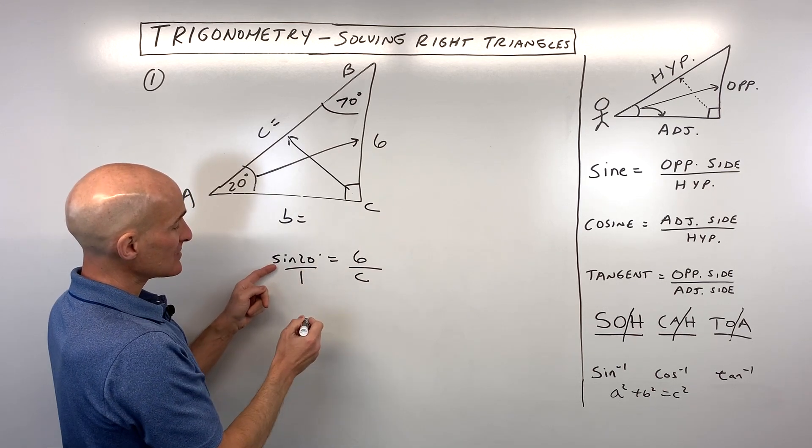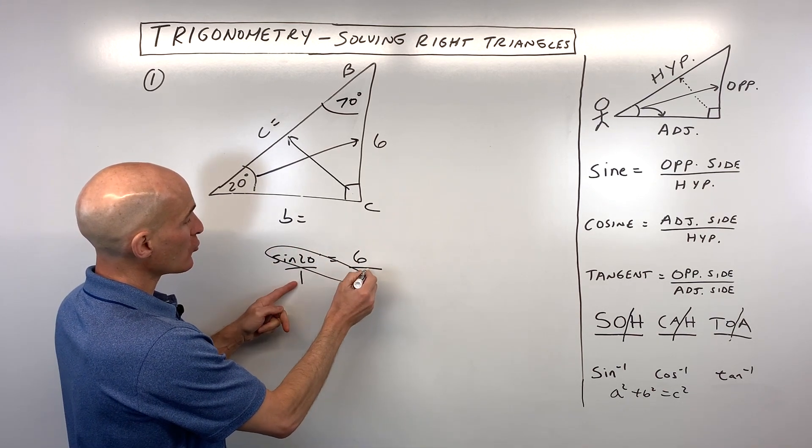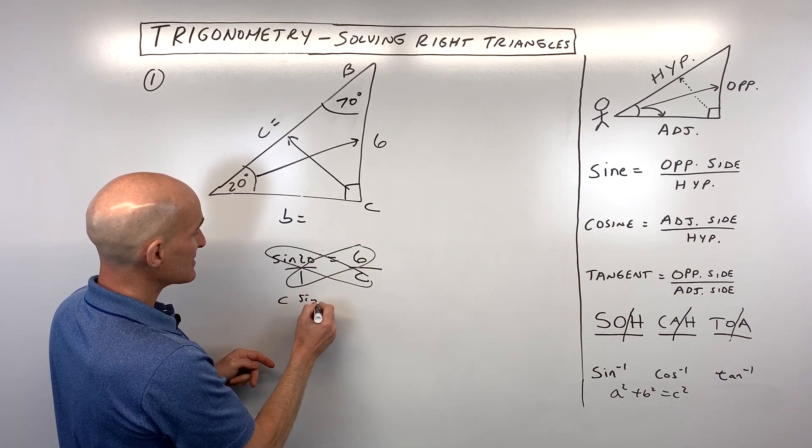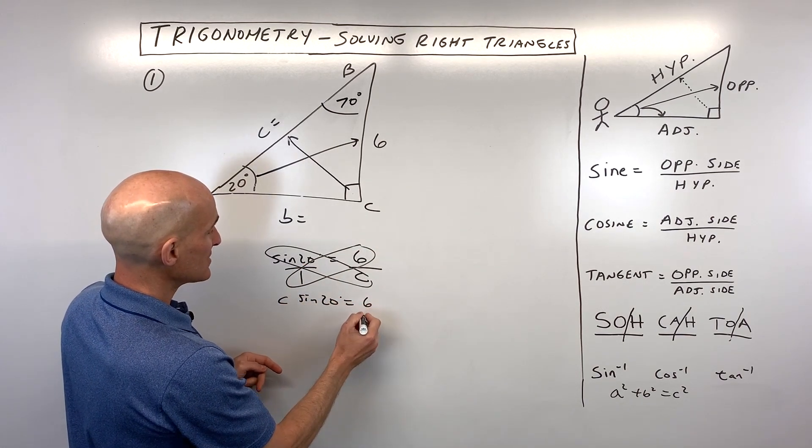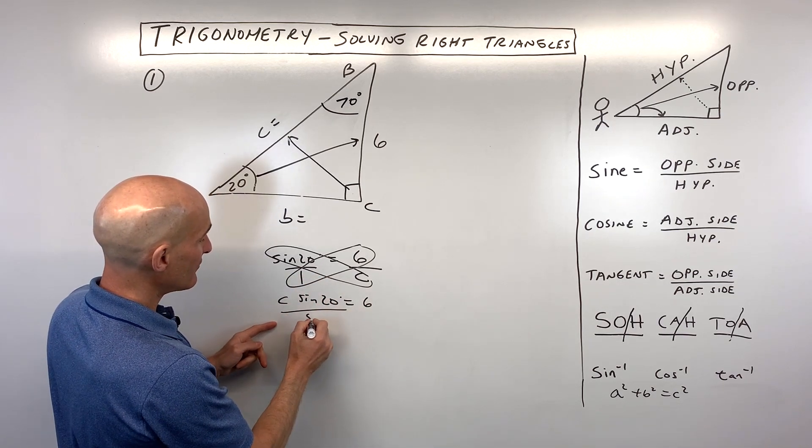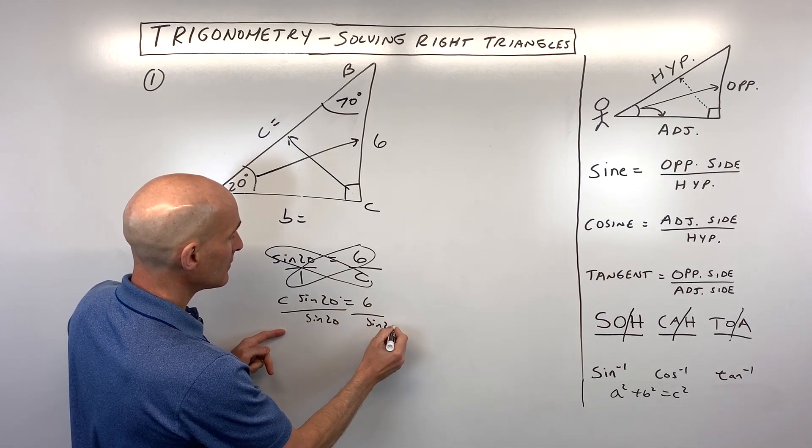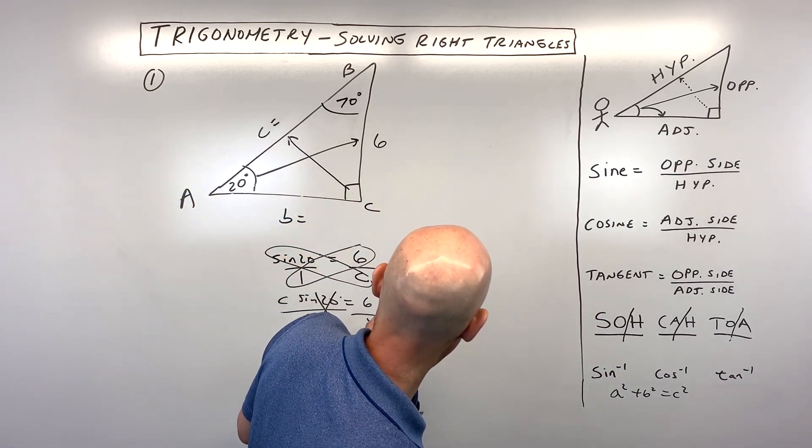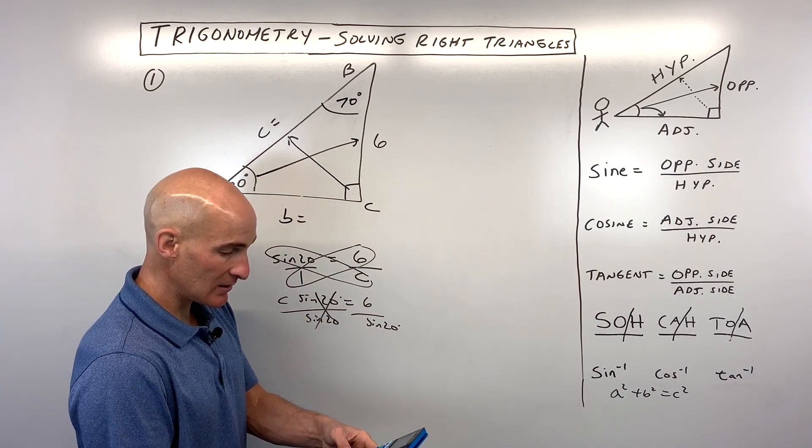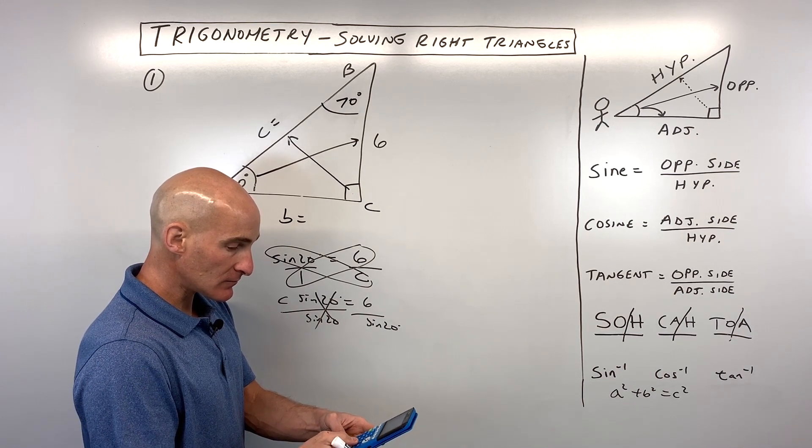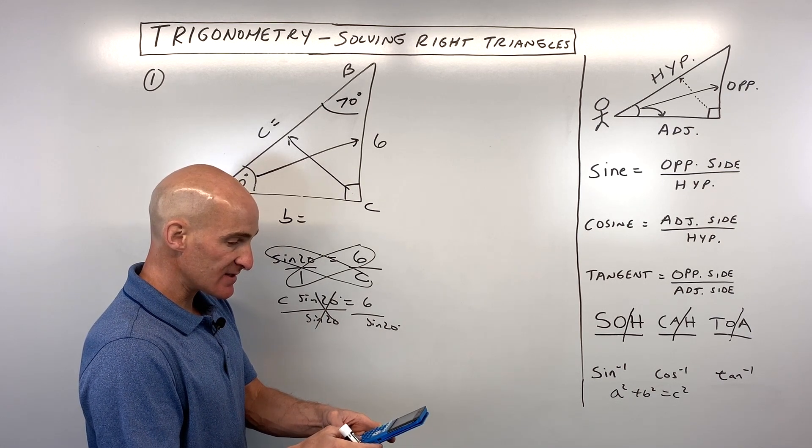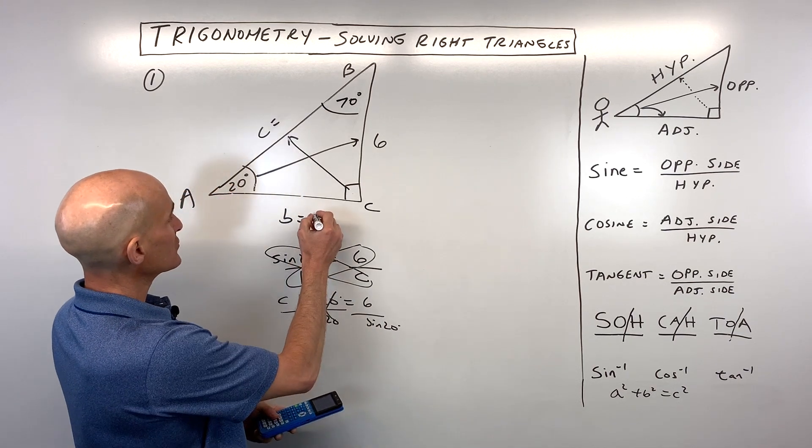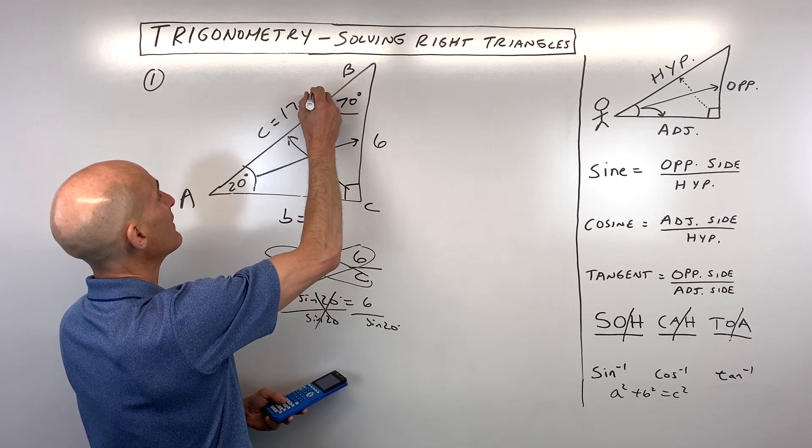Then what we can do is we can think of this as being divided by 1, anything divided by 1 is itself, and we could cross multiply to get rid of the fraction. So we have C times sine of 20 equals 6 times 1, which is 6. Then if we divide both sides by the sine of 20, that'll give us C by itself. So let's go to the calculator. We have 6 divided by the sine of 20. Make sure you're in degree mode since the angle's in degrees. So that comes out to about 17.5. So that was side C, 17.5.